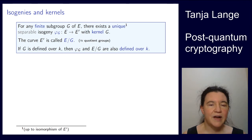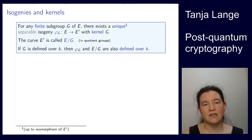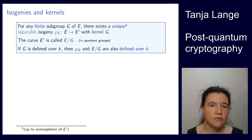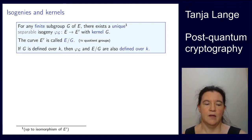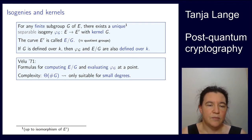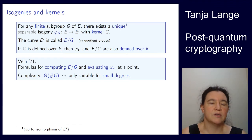Unlike quotient groups, the resulting curve actually has the same number of points. Over F_q, we'll still find the same number of points over any field k where these curves are isogenous. If the subgroup is defined over k, then both the map and the resulting curve are also defined over k.